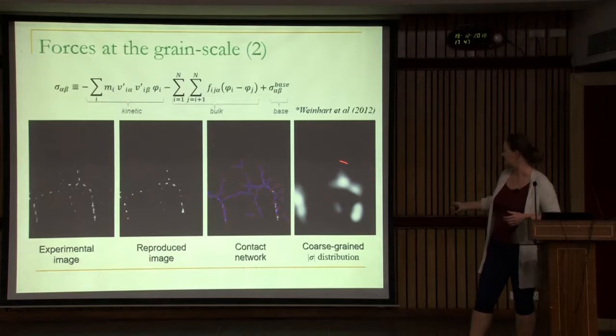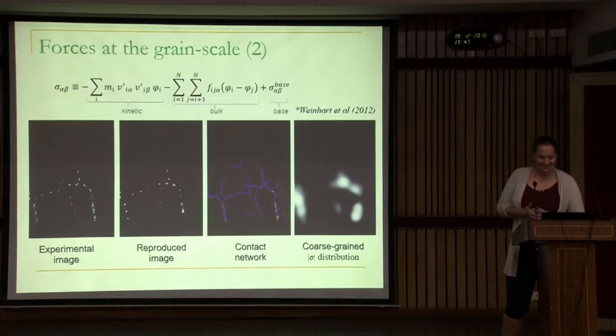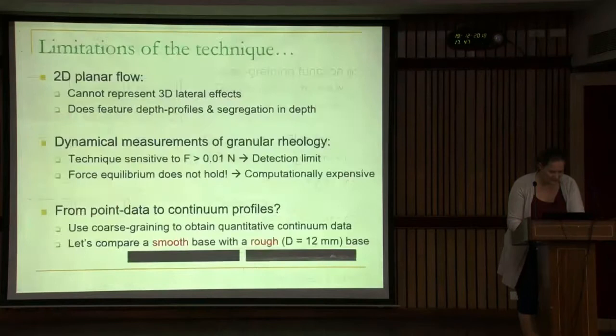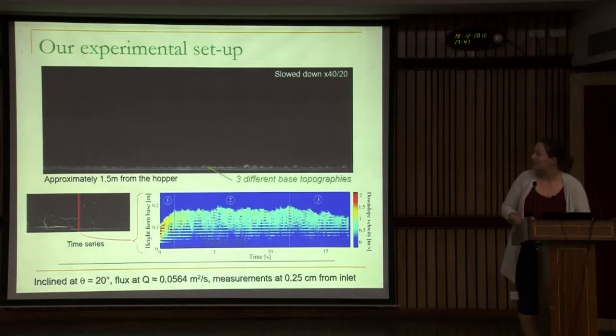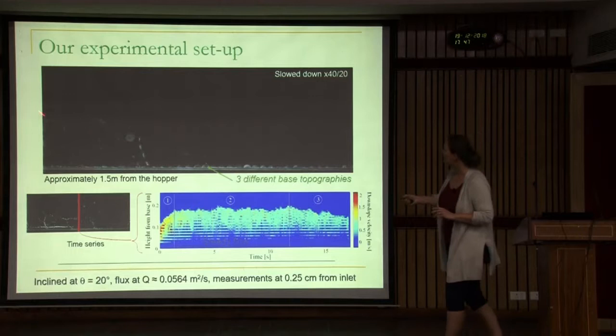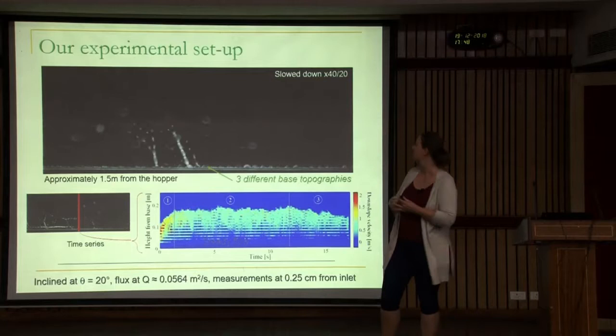Let me come back to the movie of force chains appearing. As these particles come down, you see that the force chains are inclined at a certain angle. But running it a little more, you'll see it's not only that angle — there's also another angle that's prevalent: horizontal. There are two preferred angles: one inclined in the flow direction and one horizontal. This appears later in the flow.